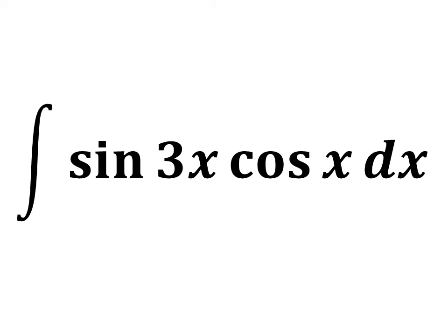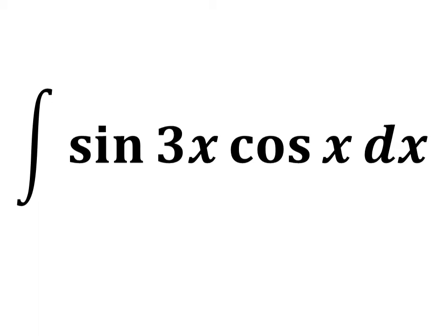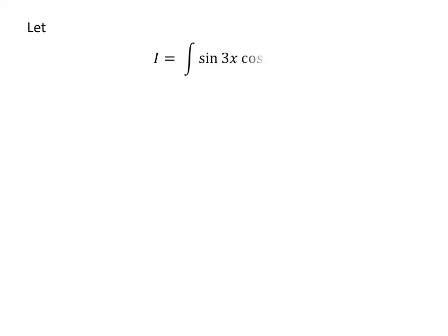In this video, we will learn to find the integral of the product of sine of 3 times x and cosine of x. The integral can be solved by at least two methods. Here I have explained one of them. Let us assume i is equal to the integral of sine of 3 times x times cosine of x with respect to x.